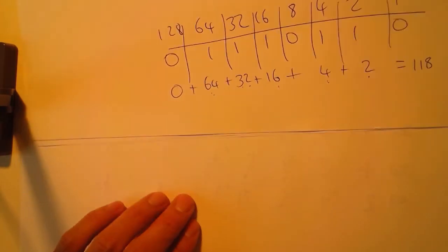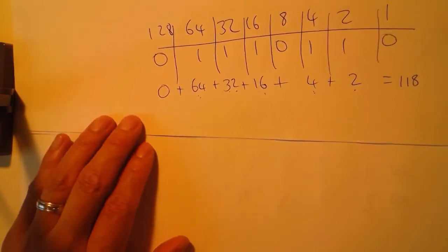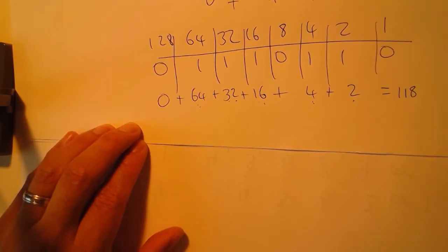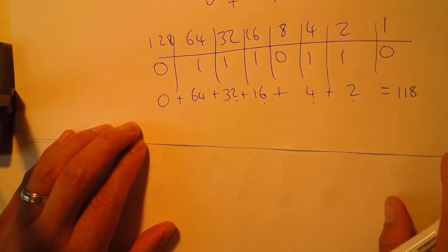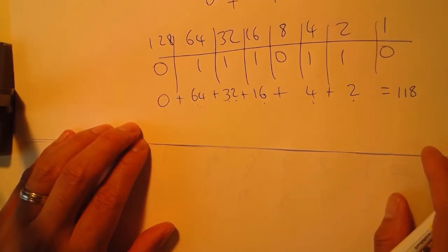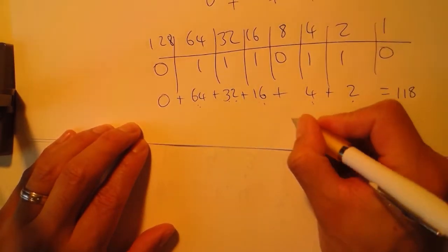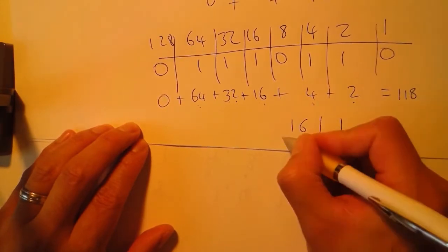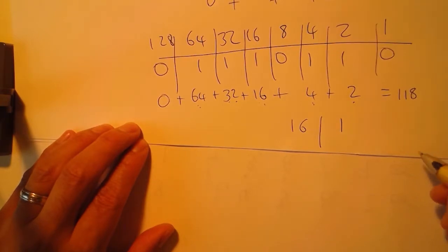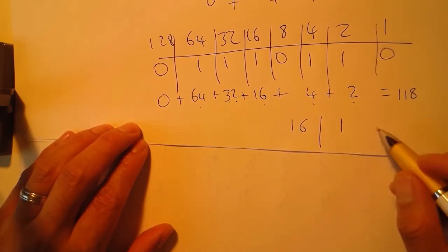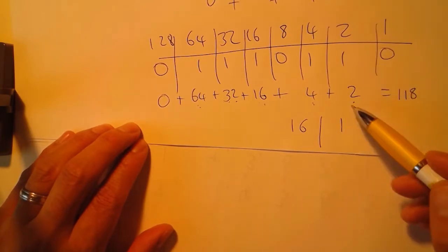As the name suggests, hexadecimal: hexa meaning six, decimal meaning ten, six plus ten is sixteen. Effectively what we've got here is base one, base sixteen, and the next column is actually sixteen times sixteen which is 256. In your exam you're only going to get two digit hex.